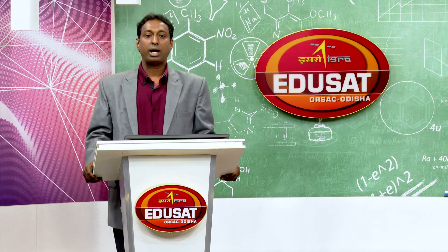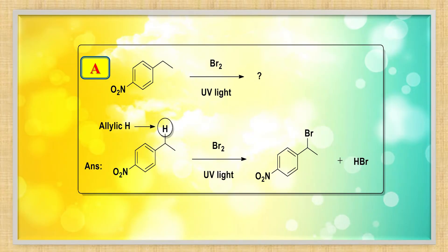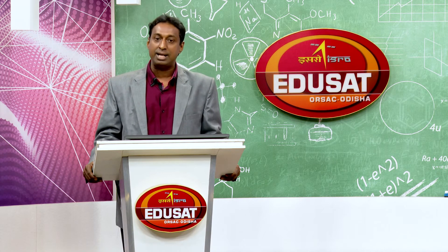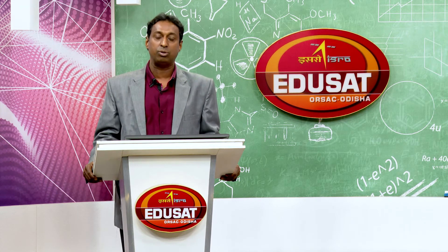Q&A: An aromatic ring with a NO2 group and a para-ethyl group is brominated in the presence of ultraviolet light. As discussed, this is benzylic bromination — the hydrogen on the benzylic carbon (marked on screen) is replaced by bromine. The H on the benzene ring itself is not removed.